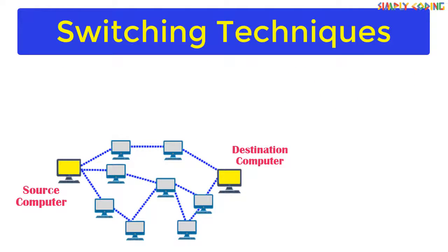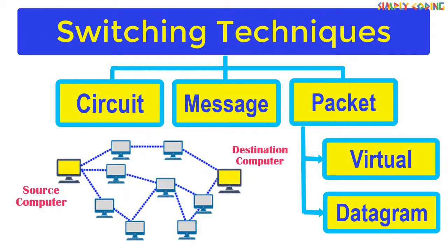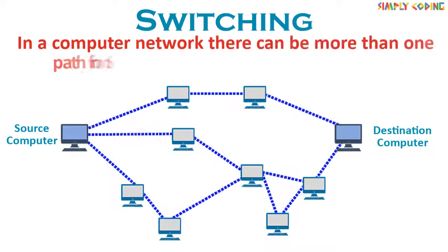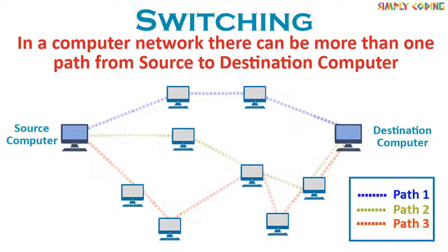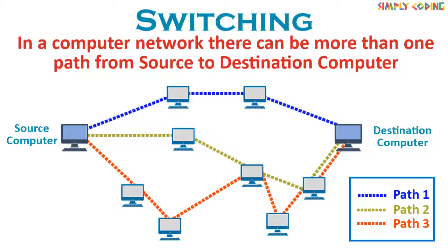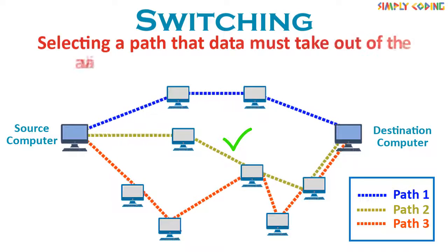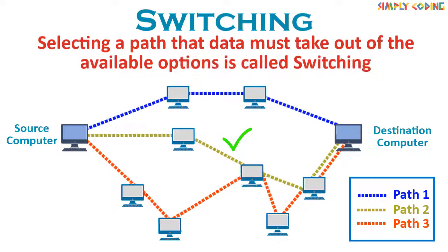Hello, in this video we will learn about different switching techniques used in computer networks. First, let's understand what switching is. In a computer network, where many different computers are connected to each other, there can be more than one path to send data from one computer to another. Selecting a path that data must take out of the available options is called switching.